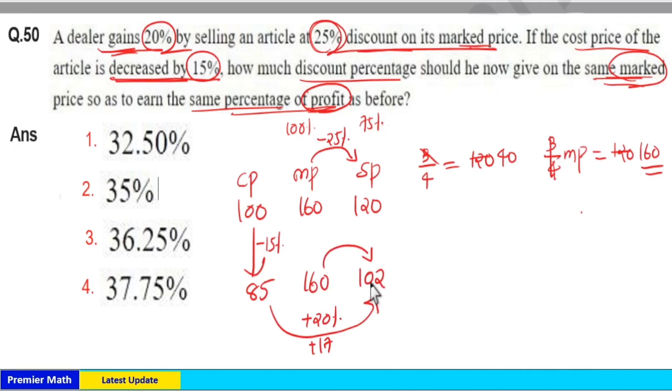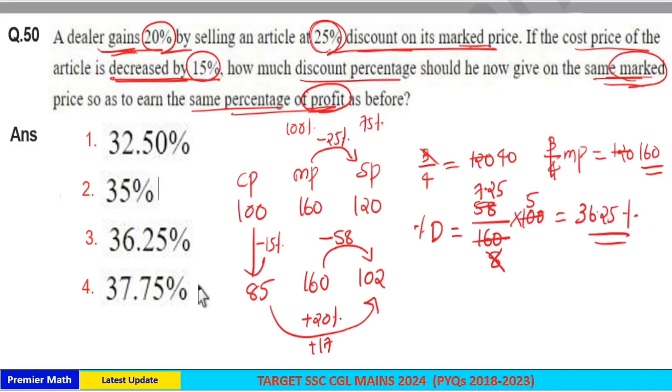160 minus 102, 58 rupees discount. Now percentage discount equals 58 rupees discount on 160 rupees mark price upon 100. So 20 goes 8 times in 160, 5 times in 100. 8 goes 7 times in 56, remaining 2. 8 goes 2 times in 16, and 5 times in 40. So 5 into 7 is 35, 5 into 0.25 is 1.25. 35 plus 1.25 equals 36.25. It's option 3, 36.25%.